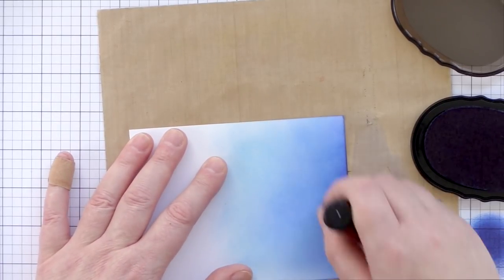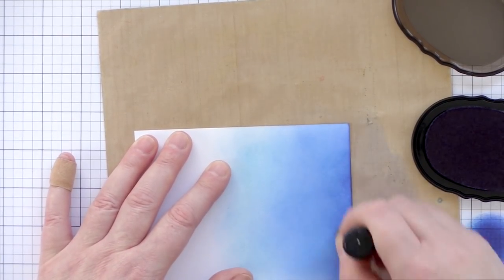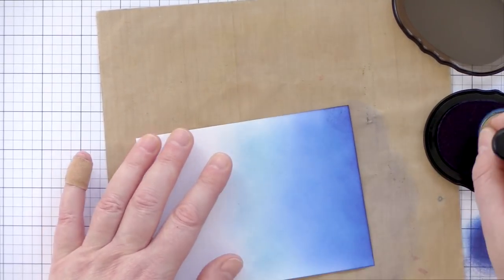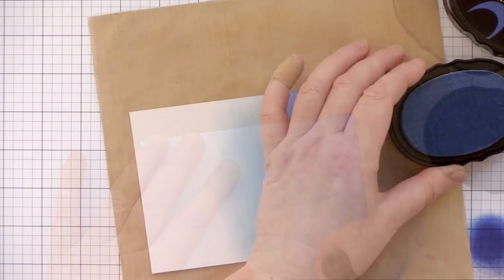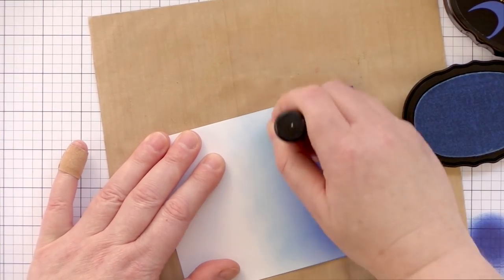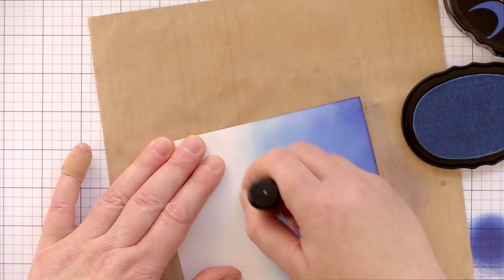As this is a much darker color, you really don't need much ink on the blending tool, and also using a light hand helps to give an even blend. To finish, I like to go back over the transition area with a lighter colored ink to blend them together nicely.